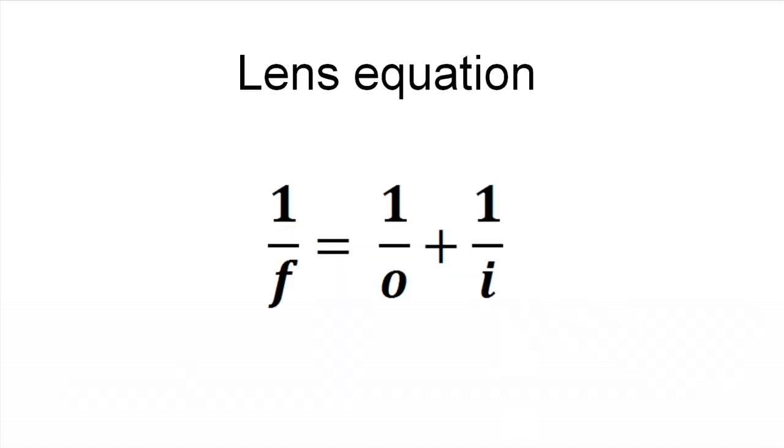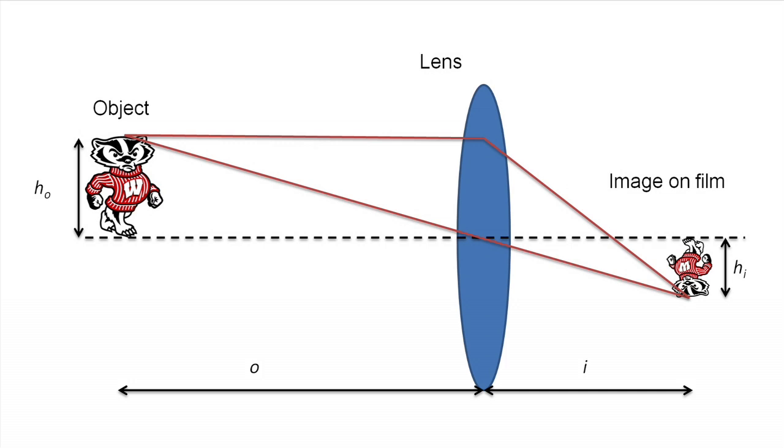You can see this in the lens equation. If F is constant then the left hand side of the equation should remain the same. That means if either I or O is varied the other one has to change to get the proper image in focus.